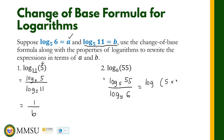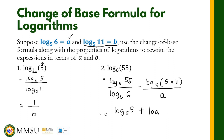We know that 55 is equal to 5 times 11, so we can write the numerator as the logarithm of 5 times 11 in base 5, and the denominator is already a. We are going to use the product rule for the numerator, so it becomes the logarithm of 5 in base 5 plus the logarithm of 11 in base 5, all over a. The logarithm of 5 in base 5 is equal to 1, and the logarithm of 11 in base 5 is given as b. So our final answer is 1 plus b over a.